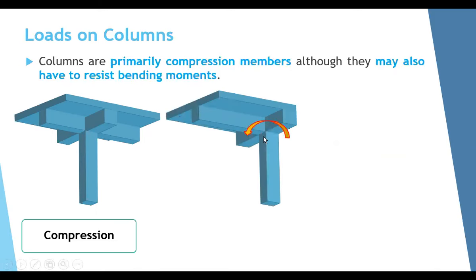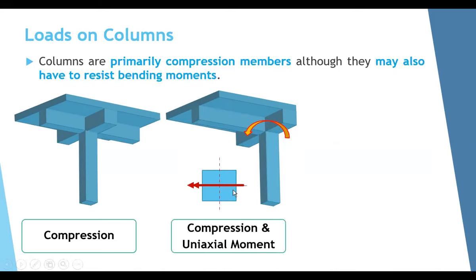If you have a perimeter column with a beam from only one side, the rigid connection between the beam and column will transfer moment to the column. In the cross section, there will be moment about only one axis — we call this compression plus uniaxial moment.